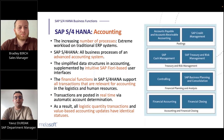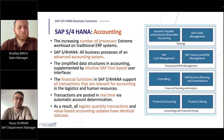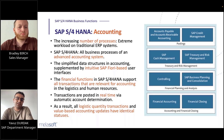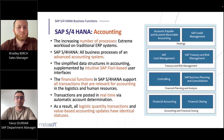On the accounting side, the number of processes increases, resulting in extreme workloads on traditional ERP systems. SAP S4 HANA has all the capabilities of an advanced accounting system. Using intuitive SAP Fiori-based user interfaces, data structures are simplified and accounting processes can be managed much more efficiently. Financial functions in SAP S4 HANA support all transactions relevant for accounting in logistics and human resources. Transactions are posted in real time through automatic account determination, so all logistic quantity transactions and value-based accounting updates share the same identical status in the system.